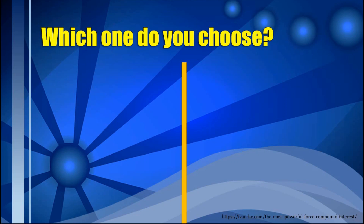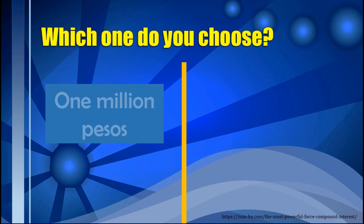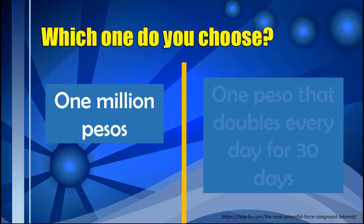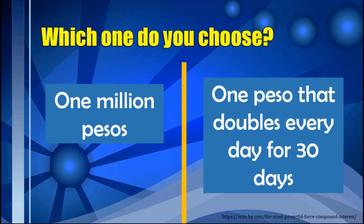If you were asked to choose, which one would you choose between the two? Is it the 1 million pesos, or the 1 peso that doubles every day for 30 days? You might think the same as other people and take the 1 million pesos. But do you know that a peso will be about 5 million after 30 days?